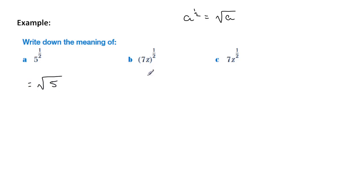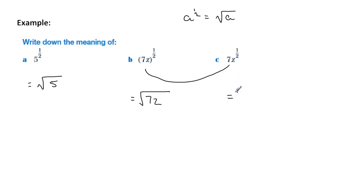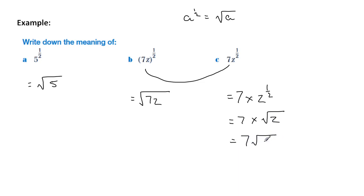In this example, it's very important to see the difference between the two expressions. In the first one, the z and the 7 are inside the brackets, so when we write it out, both of them will be inside the square root sign. Whereas in the other expression, it's best to write it out in expanded form — you'll notice then that the 7 is not influenced by the square root sign, only the z is. We can then write these together and drop the times sign.